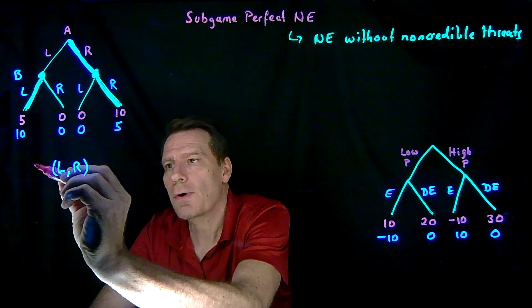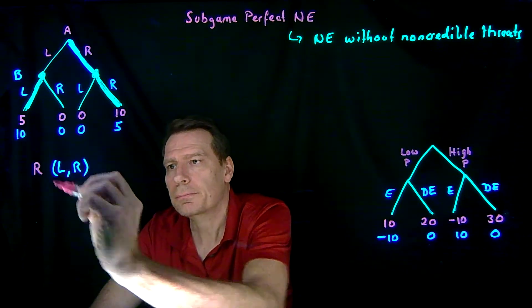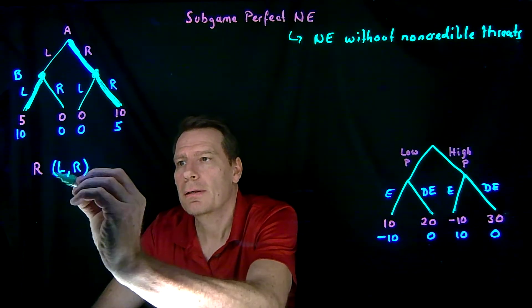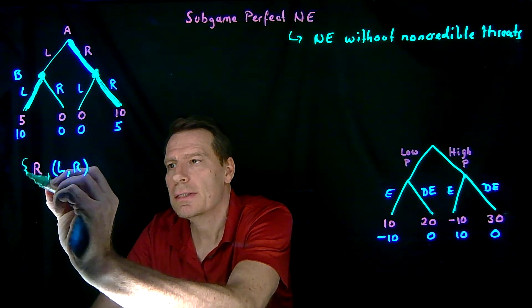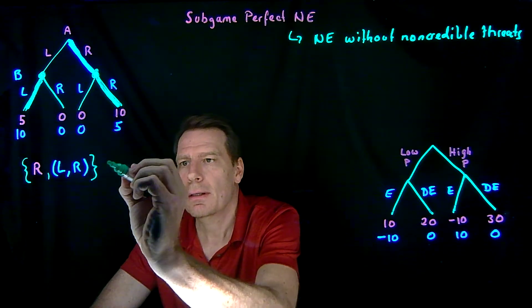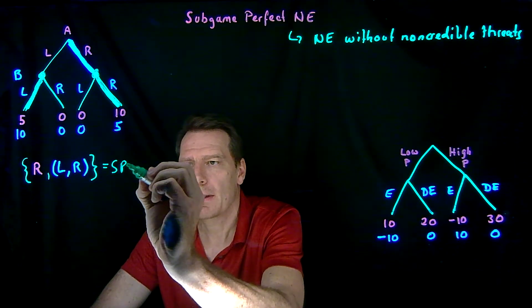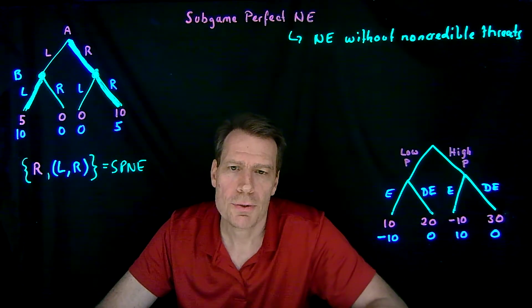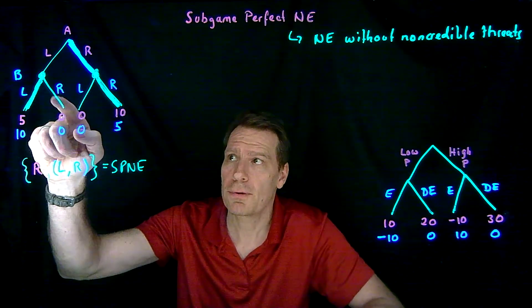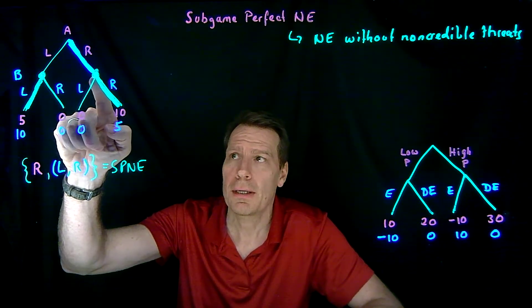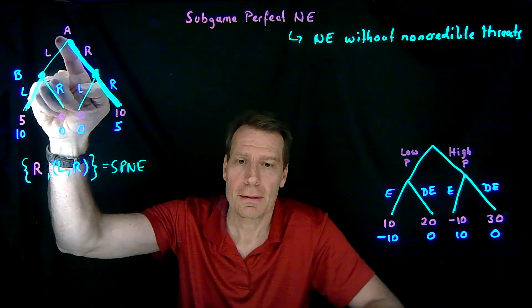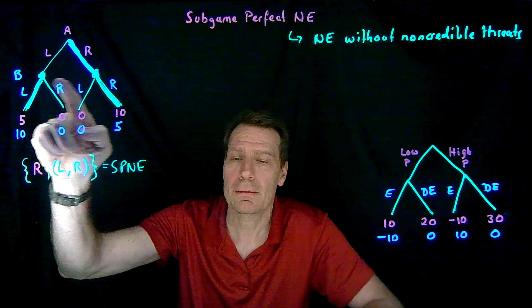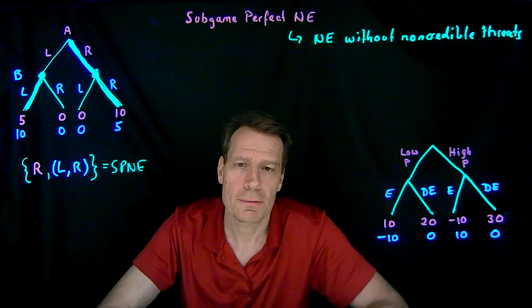So player A is going to go right, player B is going to play left-right, and we have the set of strategies that make up our subgame perfect Nash equilibrium. All we did was start at the bottom and figure out what's optimal from each node, then take that as given as we move up the tree and figure out what's optimal given what we found earlier on.